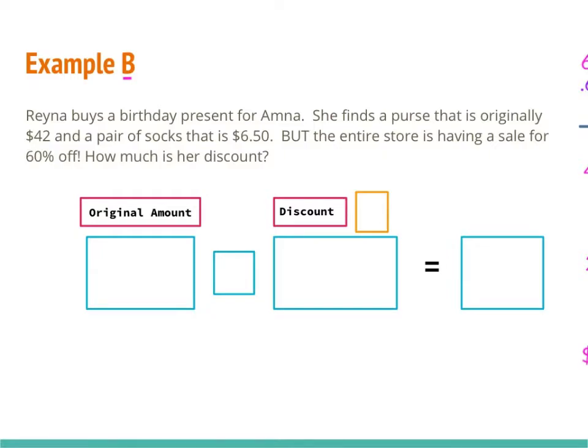Example B says Reina buys a birthday present for Ampa. She finds a purse that is originally $42 and a pair of socks that are $6.50, but the entire store is having a sale for 60% off. How much is her discount? I've laid out three boxes: one for the original amount, one for the discount, and one for the total.